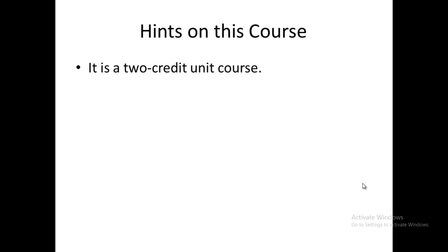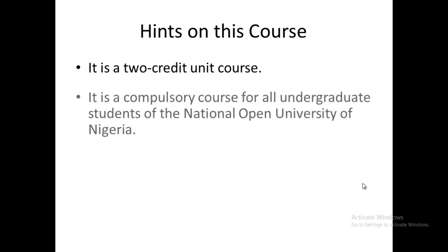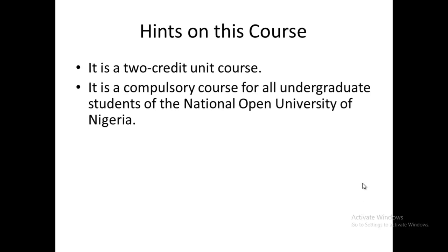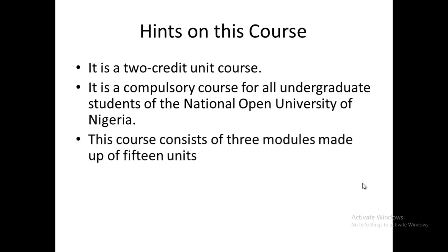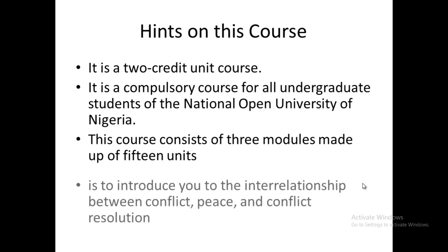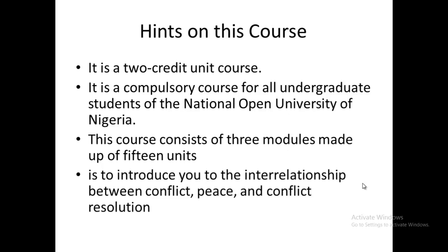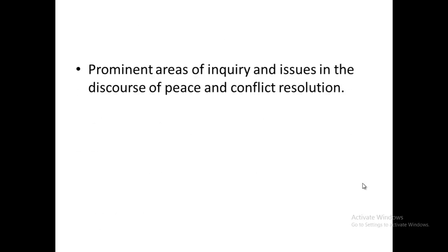It is a two-credit unit course, compulsory for all undergraduate students of the National Open University of Nigeria. The course consists of three modules made up of 15 units, an average of five units per module. It will lead you to the entire relationship between conflict, peace, and conflict resolution, so that we can get a better society.